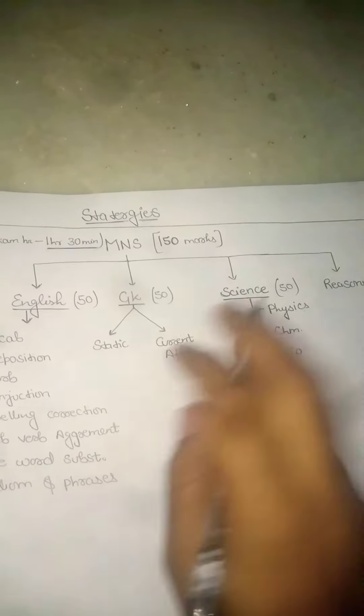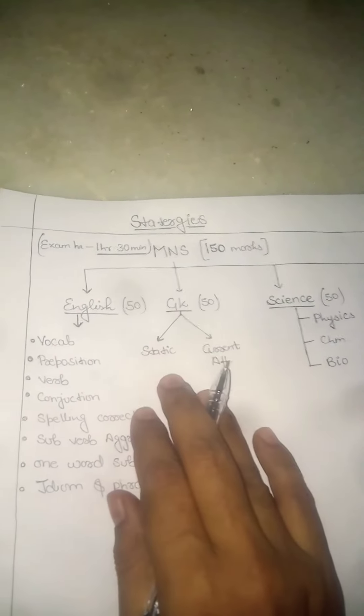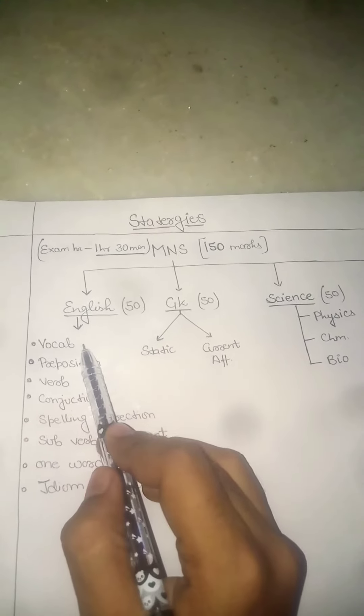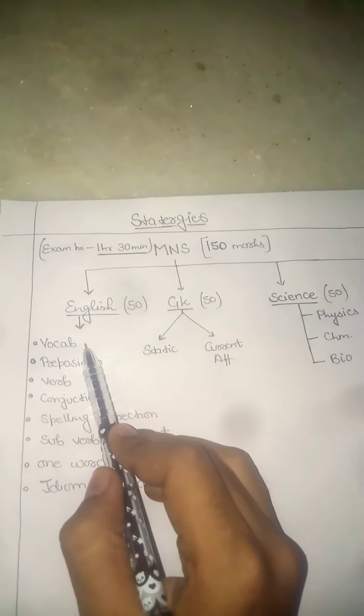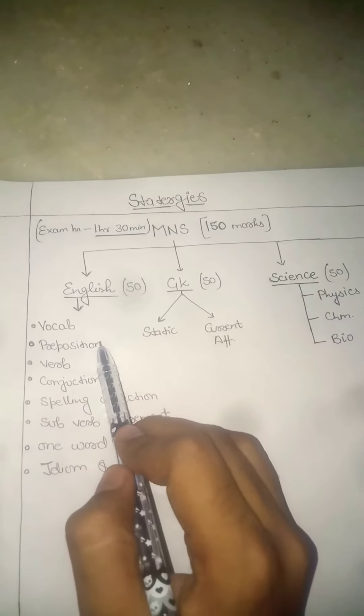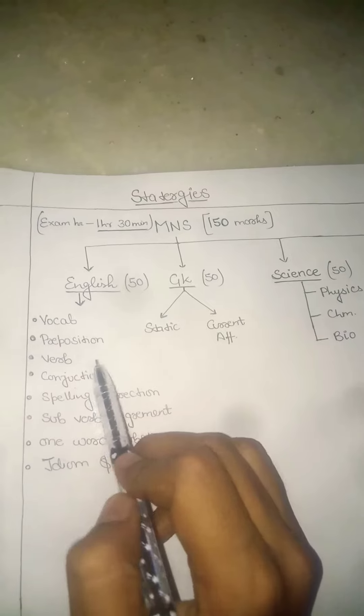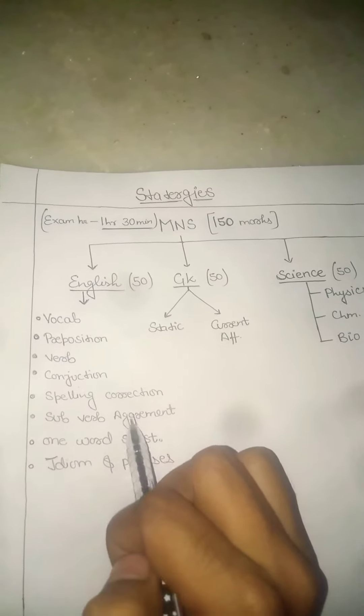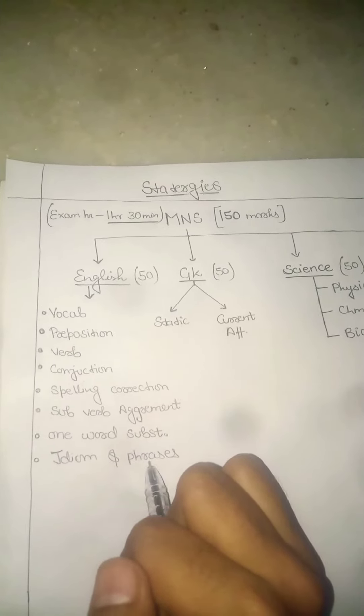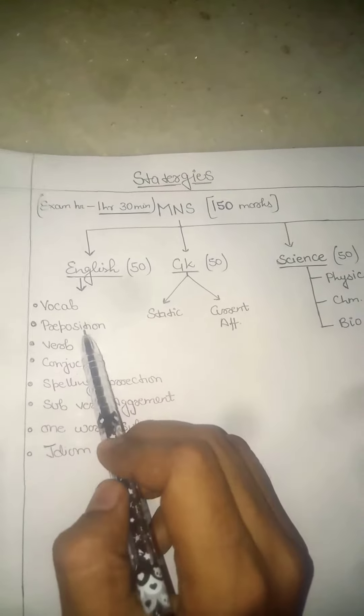So you need to prepare for reasoning. You need to focus on English, and in English you have to do more vocabulary. In English you have to know vocabulary, prepositions, verbs, conjunctions, spelling corrections, subject-verb agreement, one word substitution. All are around 5 marks each, so total emphasis should be on English.